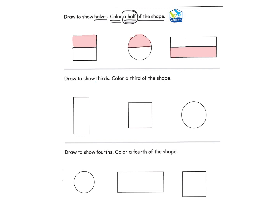The next part asks us to draw to show thirds and then color a third of the shape. I'm going to find the middle and go just a little above and a little below to help make thirds. Then I'll only color a third of the shape — I'll pick green and color the middle section. I'm only coloring in one share of the third. For the square, I go to the middle just a bit over each side, making three equal shares and coloring in one of those shares.